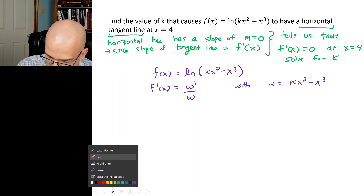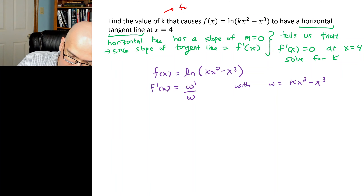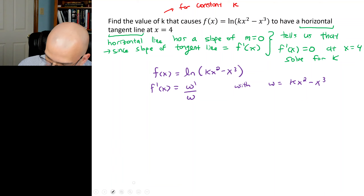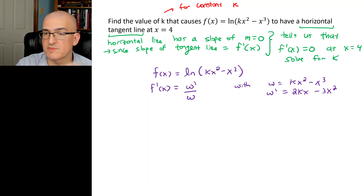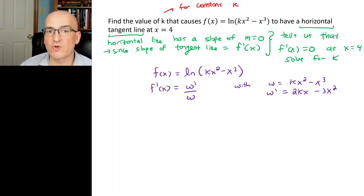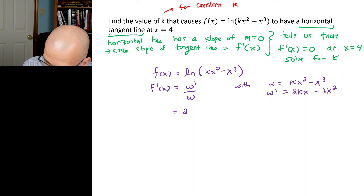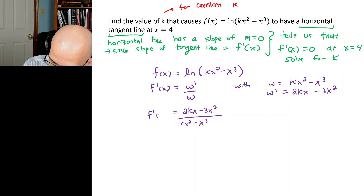We need w' = 2kx − 3x². Just as if it were 7x², the derivative of kx² is 2kx since k is a constant. So f'(x) = (2kx − 3x²) / (kx² − x³).